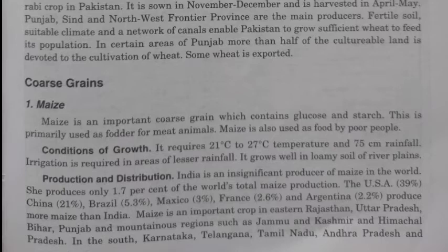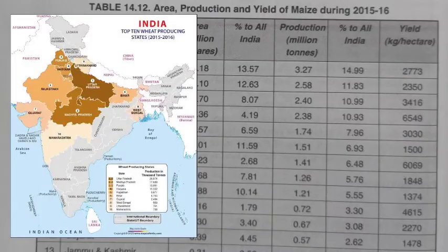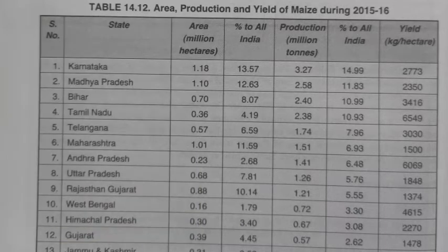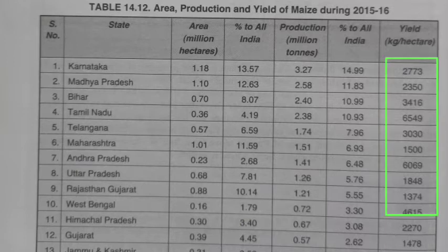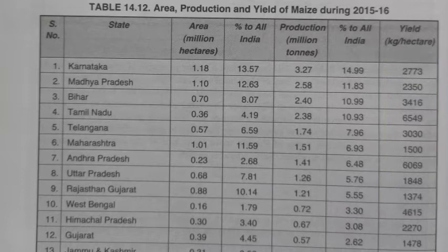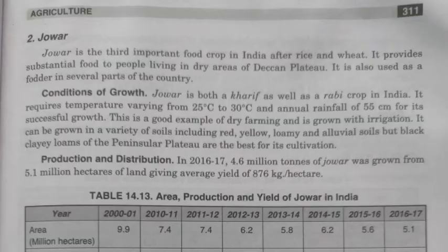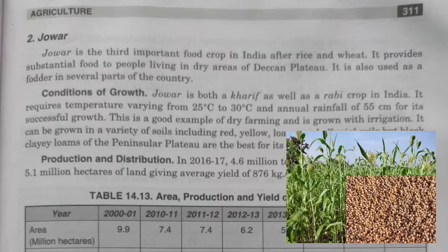State-wise area, production, and yield of maize data is given in the table. Comparing states by yield per hectare, Tamil Nadu produces around 6549 kg per hectare while Karnataka produces only 2773 kg per hectare. However, in terms of total production, Karnataka ranks first in the country.